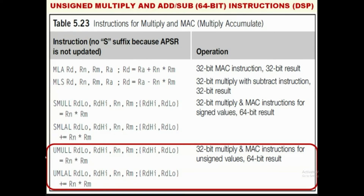Table 5.23 provides a summary of multiply and accumulate instructions including: simple 32-bit multiply and accumulate, multiply and subtract, signed multiplication with 64-bit product, and unsigned multiplication with 64-bit product and accumulation. With this we conclude the arithmetic operations of ARM Cortex M4 instructions.